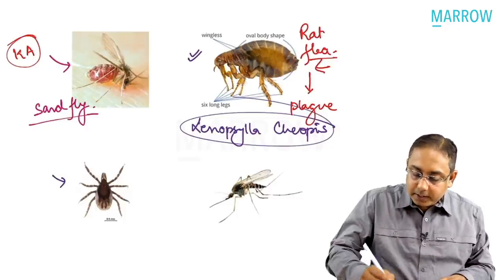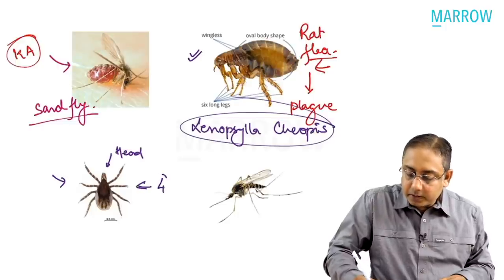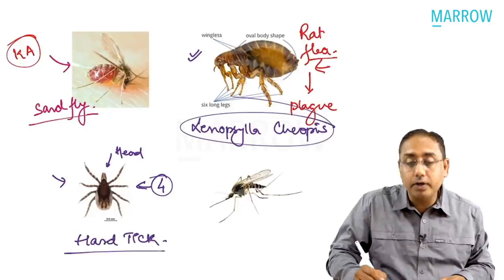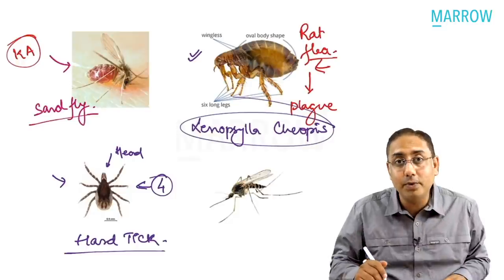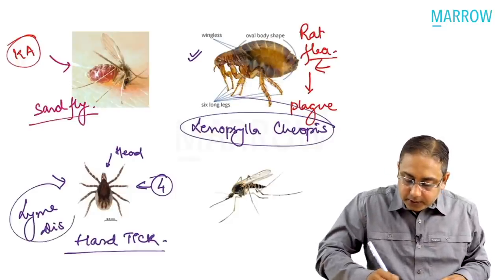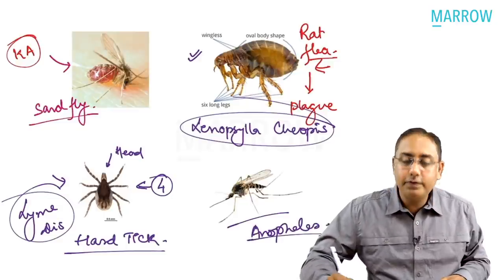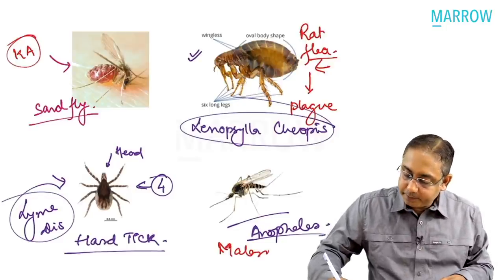The Ixodes tick (hard tick) transmits Lyme disease. The Anopheles mosquito causes malaria. Culex mosquito causes Japanese encephalitis. Aedes mosquito causes dengue fever. Mansonia mosquito, along with Culex, is implicated in causing lymphatic filariasis. Culex also causes lymphatic filariasis. These are the key vector-to-disease associations to remember.